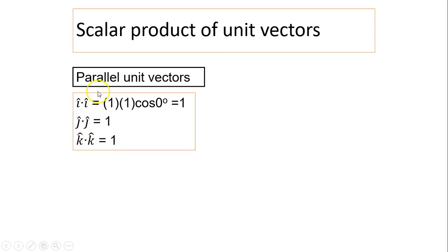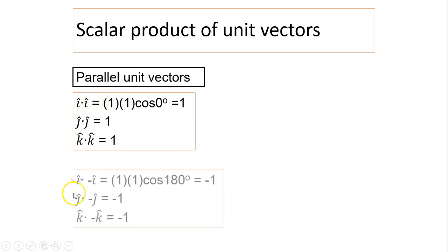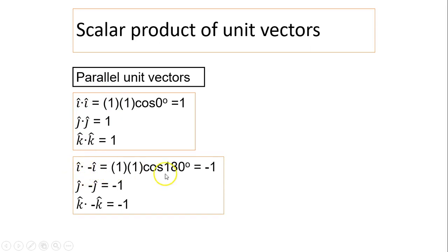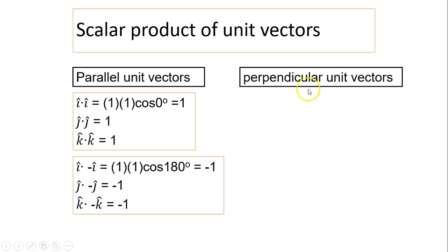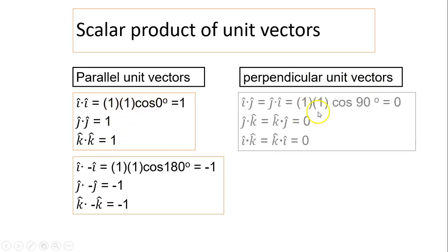What about i dot negative i? The angle between i and negative i is 180 degrees. Cosine 180 is negative 1, so i dot negative i equals negative 1. The same applies to j dot negative j and k dot negative k. For perpendicular unit vectors, i dot j equals 1 times 1 times cosine 90, and cosine 90 is 0, so i dot j equals j dot i equals 0. All perpendicular vectors have a scalar product of 0.